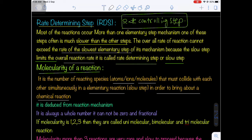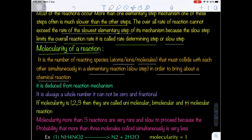In the elementary step — the slow step — the number of atoms, molecules, or ions that simultaneously collide with each other to bring about a chemical reaction is known as the molecularity. Molecularity can be deduced from the reaction mechanism. It is always a whole number — one, two, three — and it cannot be zero or a fractional value.